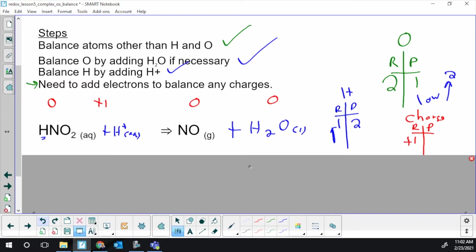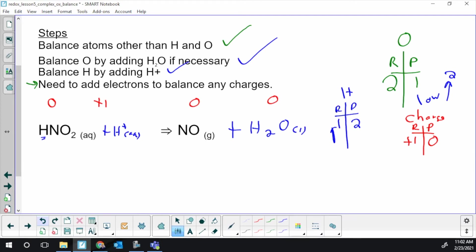The product side we have two neutral molecules—no charge there. Now we've got to add electrons to get these two numbers to be the same. When we add electrons, does it drive the numbers up or down?